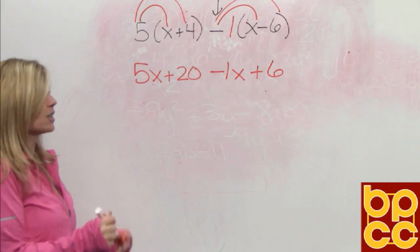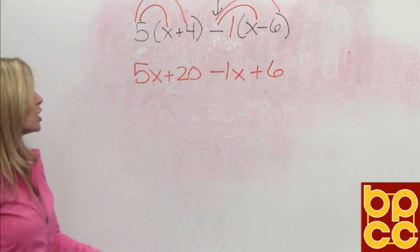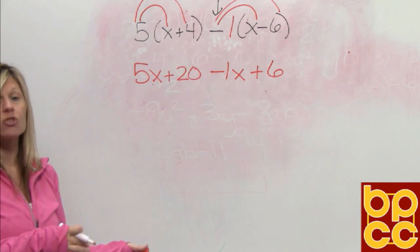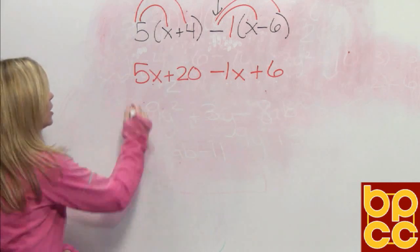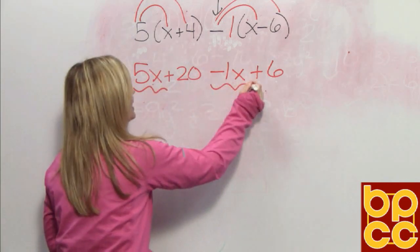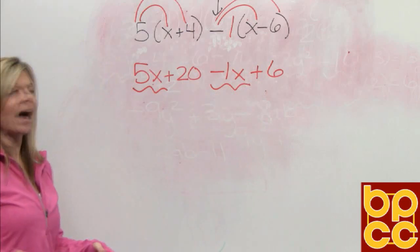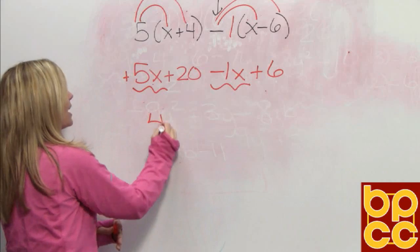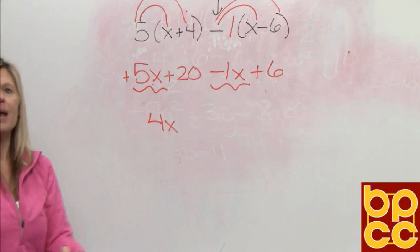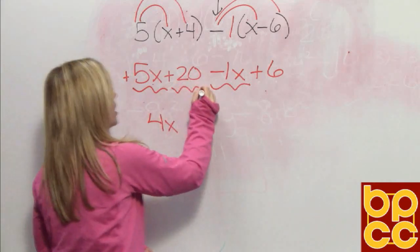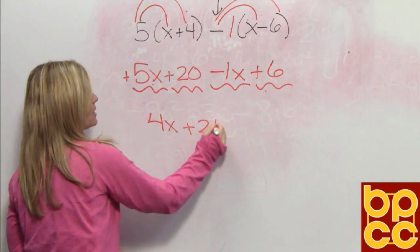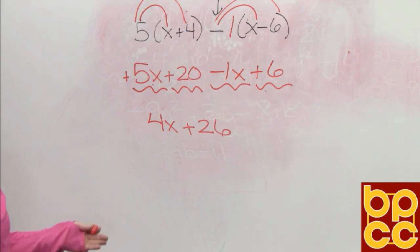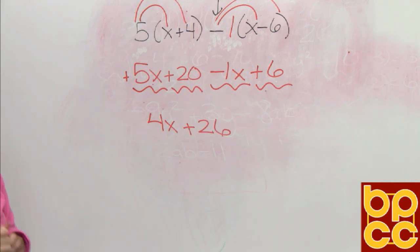Now that we're free of parentheses, we can collect like terms. When collecting like terms, we put the variables together first and then do the constants. 5x and negative 1x — the signs are different, so you subtract and give the sign to the larger, giving us 4x. Then we add our constants: 20 plus 6 is positive 26. That answer is in the correct descending order, so we're done with this algebra expression.